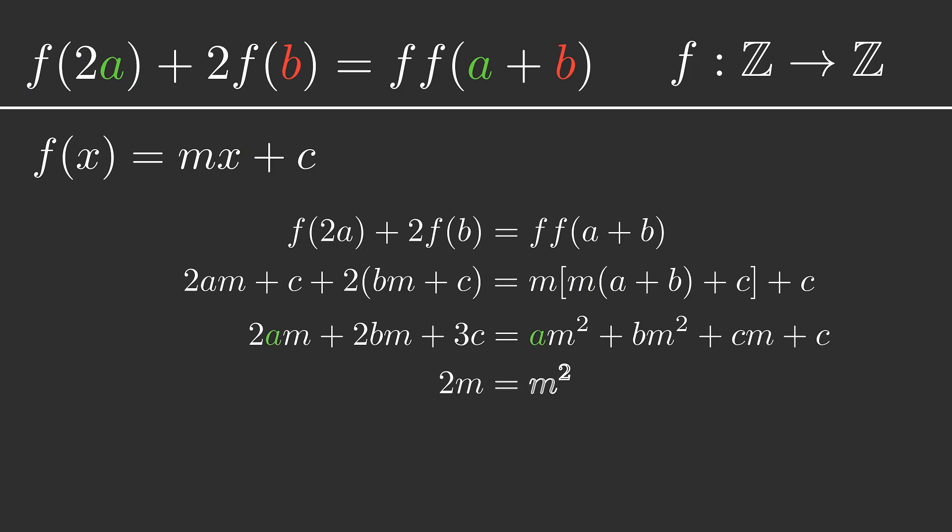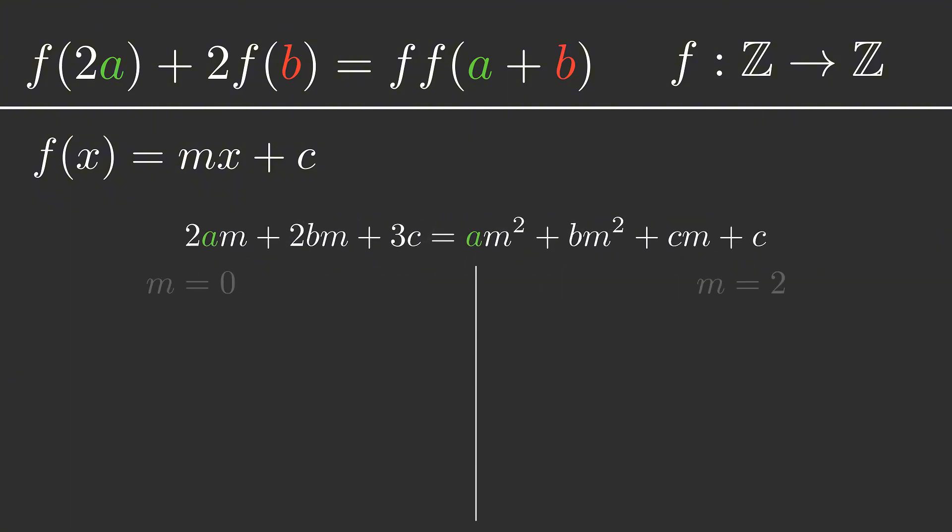So looking at the coefficients of a, we get an equation for m, namely that 2m is equal to m squared, which we can solve to give us that either m equals 0 or m equals 2. So now we have two different cases to investigate further.